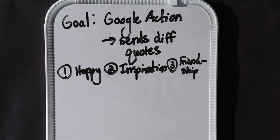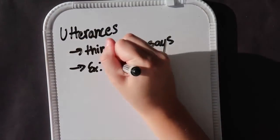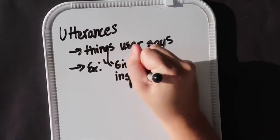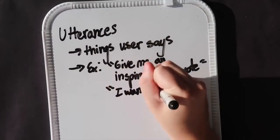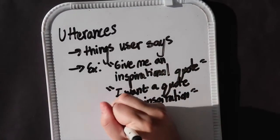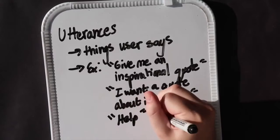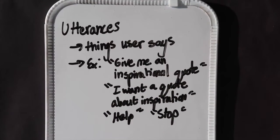If you've never created a Google action before, it essentially has three main parts. First, we have our utterances — these are things we can say to the Google Assistant once we're in our app or action. In our inspirational quotes action, we might say something like 'give me an inspirational quote,' 'I want a quote about inspiration,' 'help,' or 'stop.' These are all utterances we'll need to build into our action.